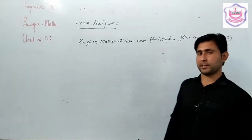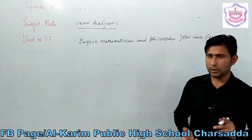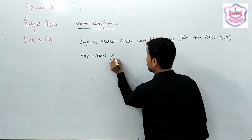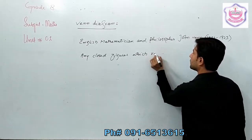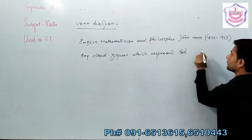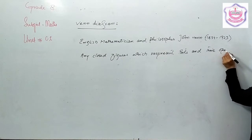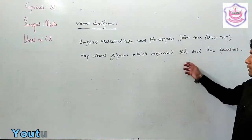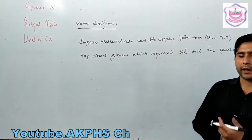According to John Venn, a Venn diagram is actually the logical representation of sets. It is any closed figure which represents sets and their operations — such as union, intersection, and other set operations.